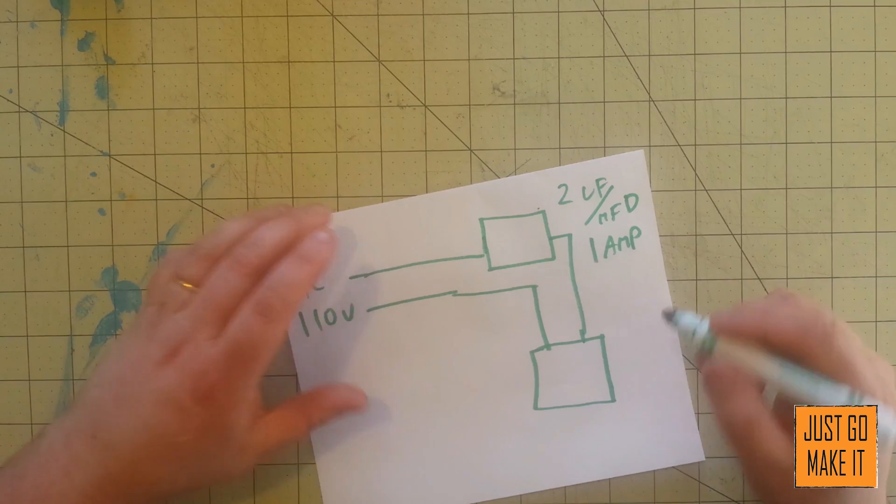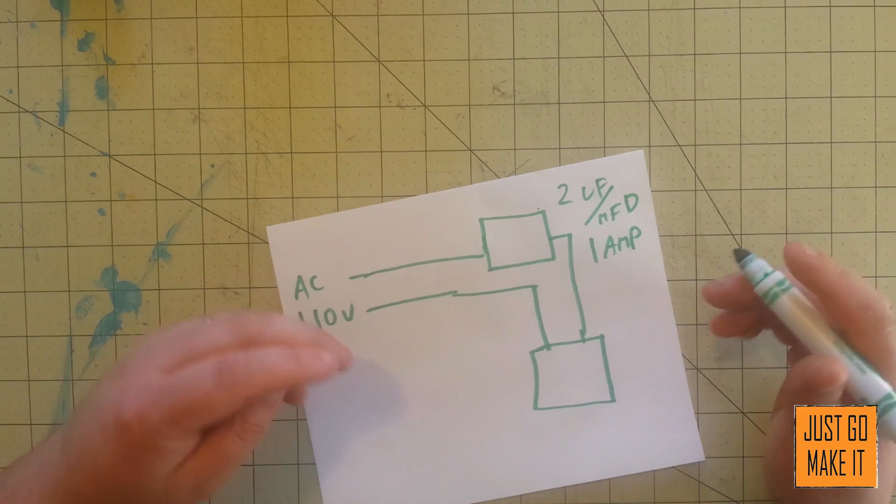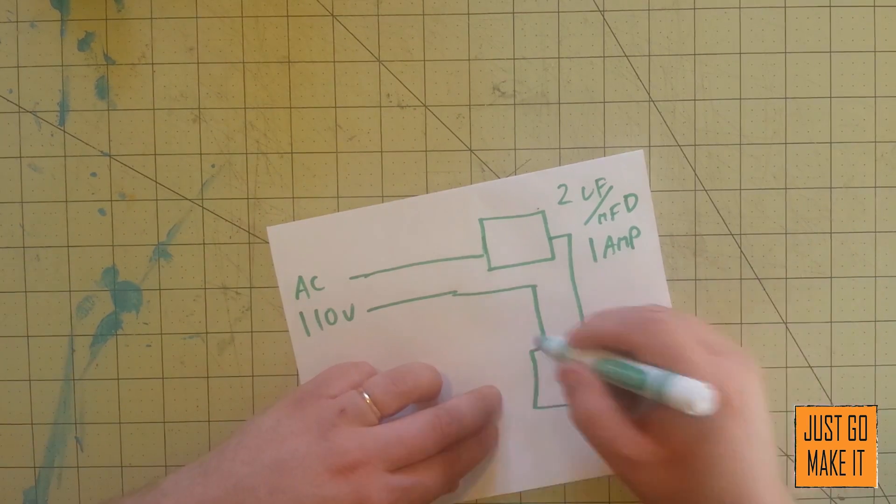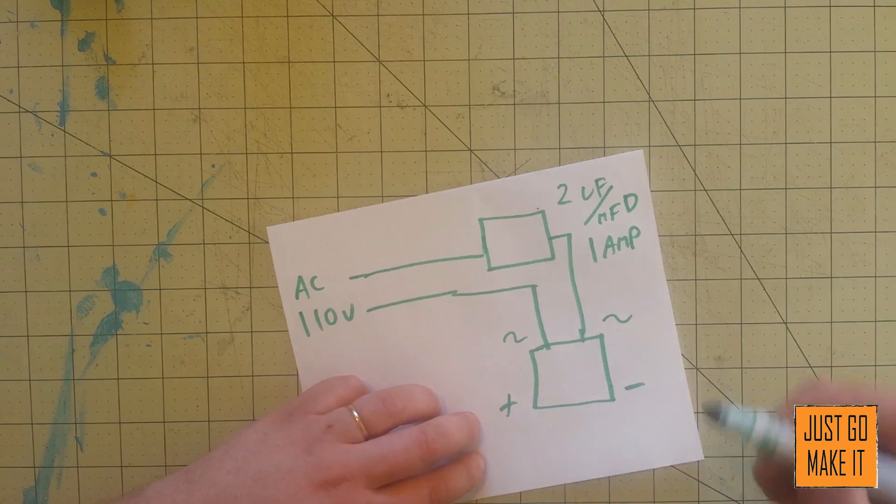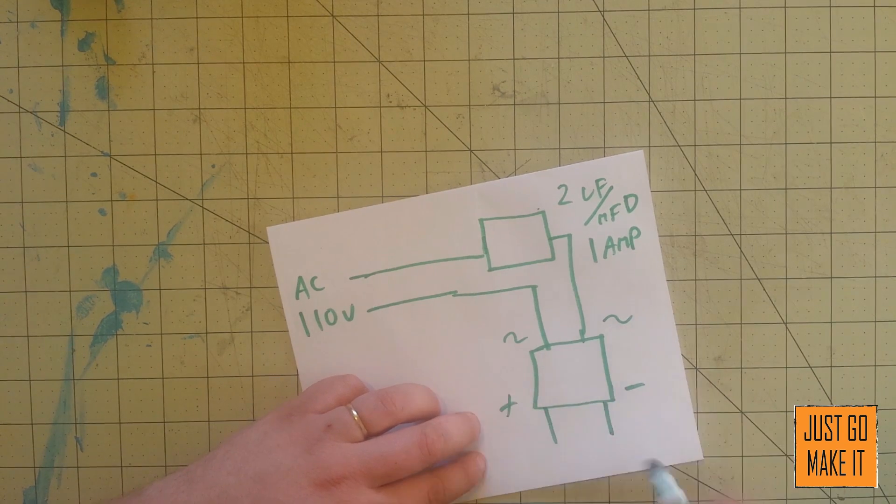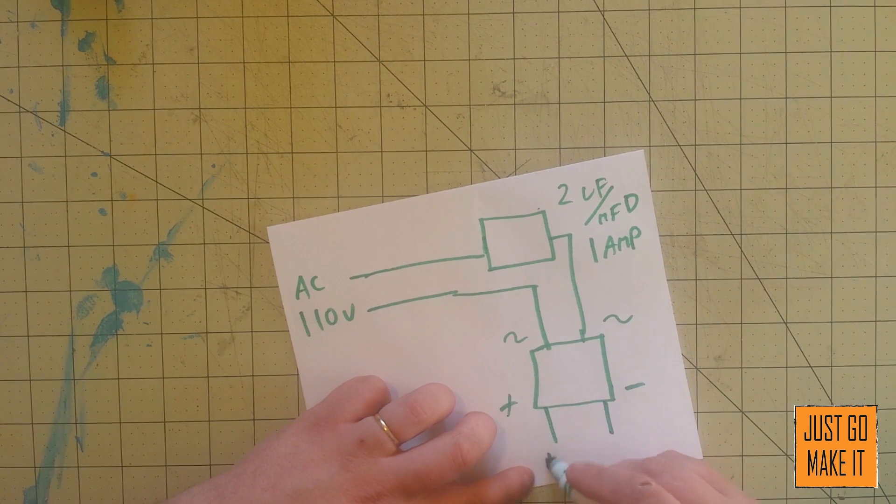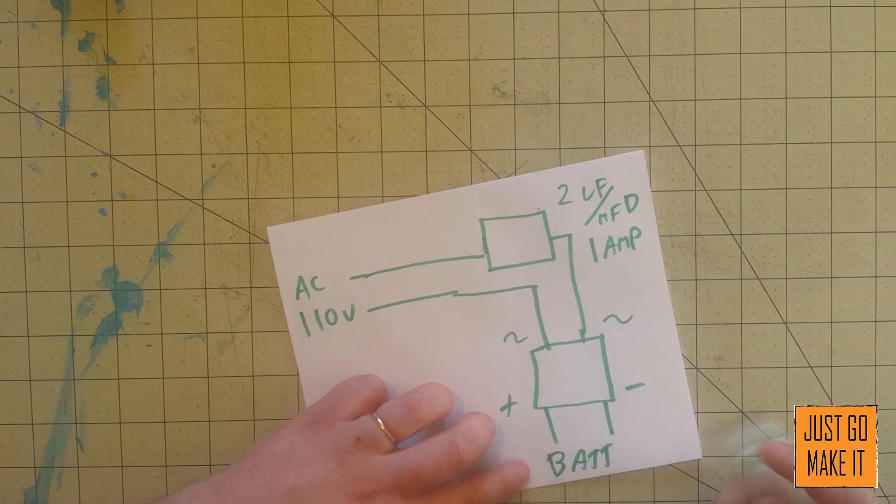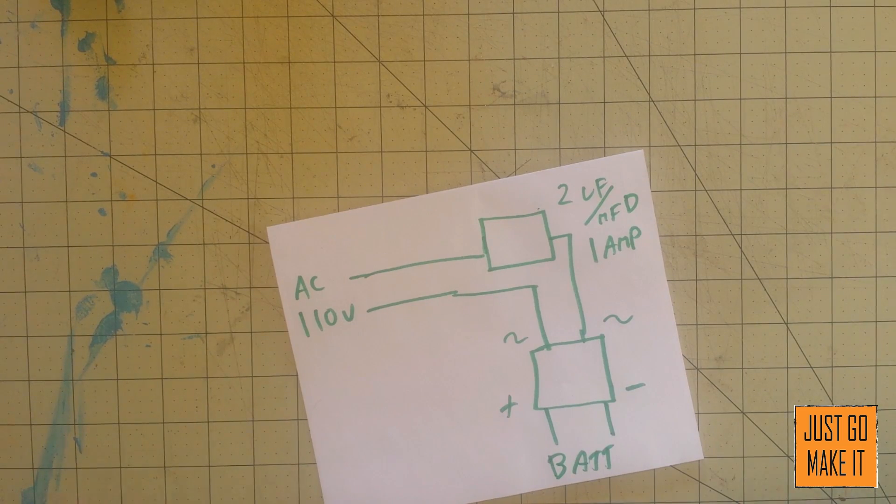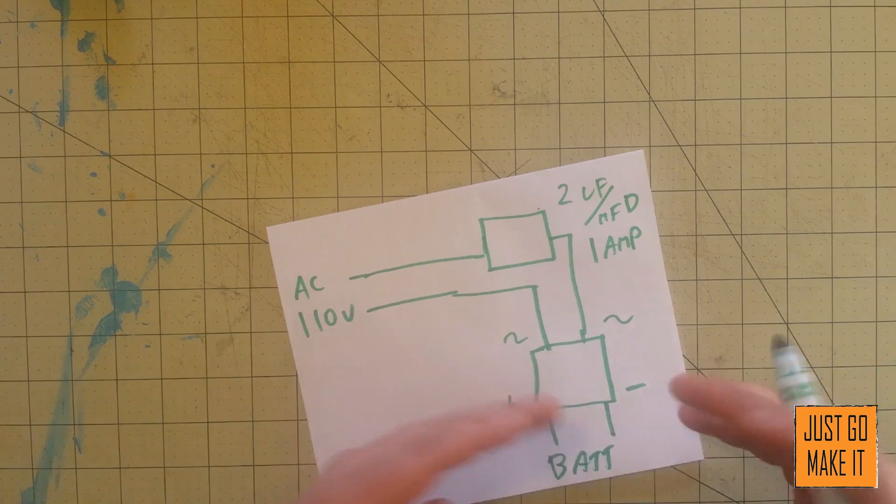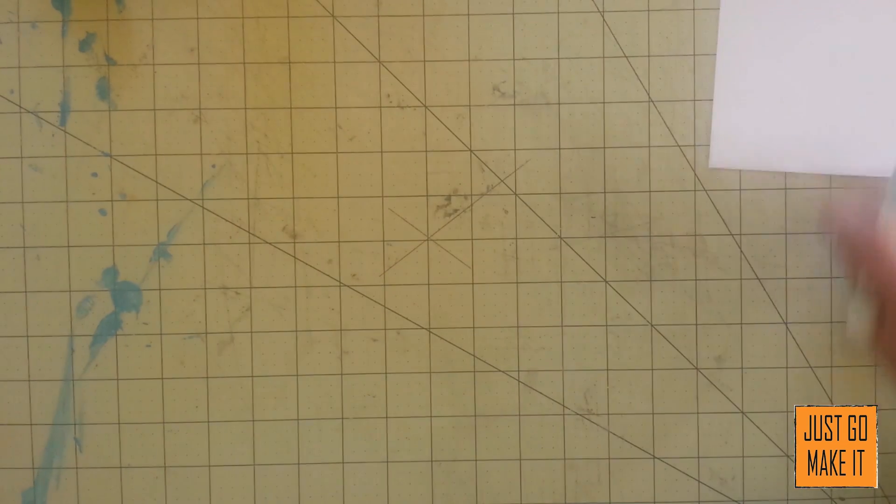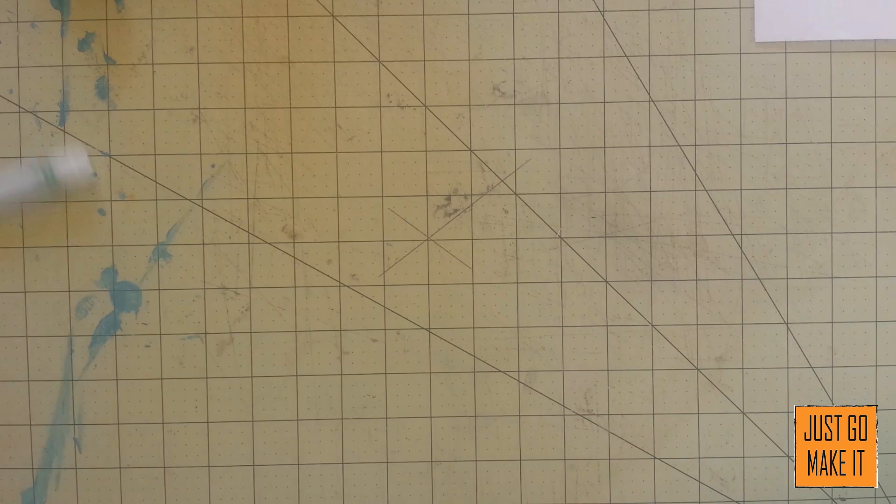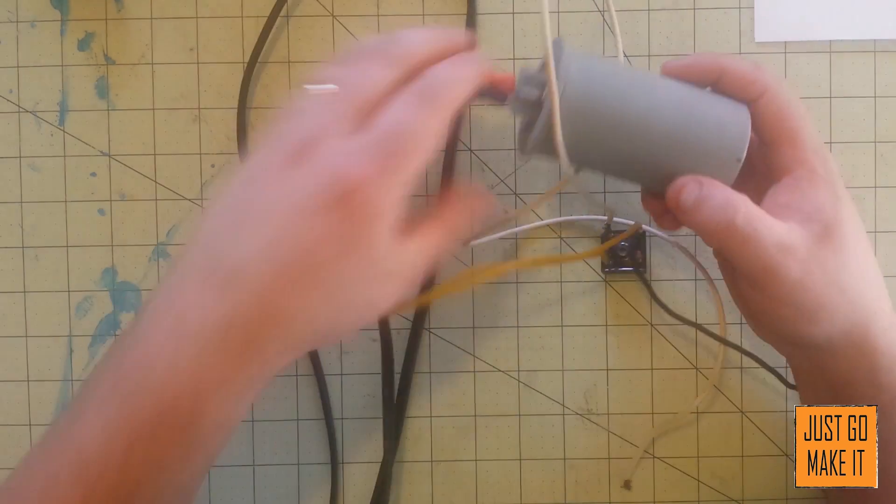A bridge rectifier has two AC connections marked by a little wave, then it will have a plus and a negative. Out of that plus and negative off the bridge rectifier, that goes to your battery. And that's as simple as it is - two parts: a rectifier and a capacitor. So let's show you the one that I've built.